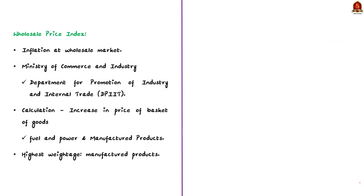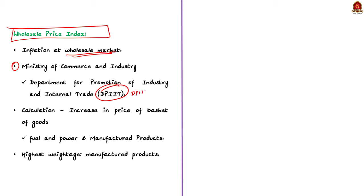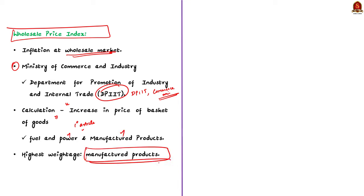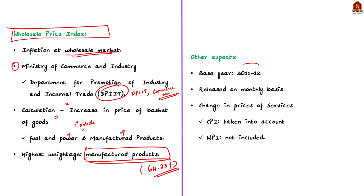Moving on, WPI generally refers to inflation at the wholesale market. The data about WPI is compiled by the Department for Promotion of Industry and Internal Trade under the Ministry of Commerce and Industry. The value of WPI is calculated from the increase in the price of a basket of commodities which includes primary articles, fuel and power, and manufactured products. The highest weightage is given to manufactured products, which accounts for 64.23% of the total weightage. Note that the base year for both CPI and WPI is 2011-12 and they are released on a monthly basis.